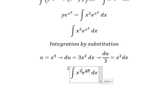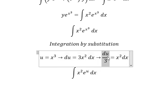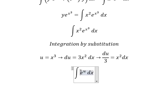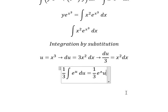So we change x cubed to u, and x squared dx becomes du over 3. The integral of this gives us e to the power of u.